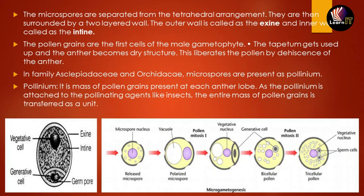The pollen grain with its two layers — outer exine and inner intine — is the first cell of the male gametophyte. The nutrition for pollen grain development comes from the tapetum. At the time of pollen grain formation, all the tapetum gets used up and the anther becomes dry, allowing it to liberate pollen grains by dehiscence.